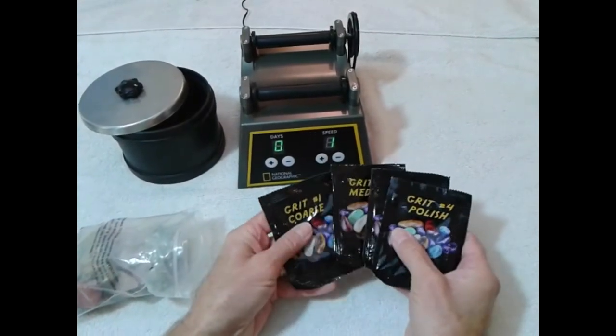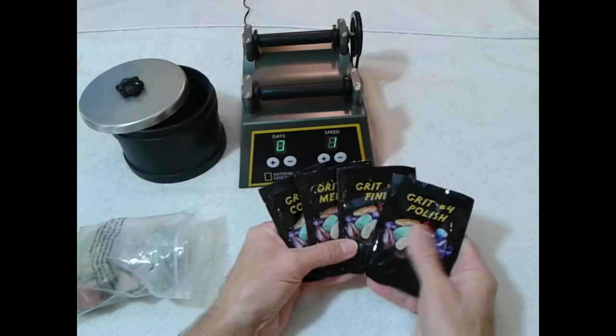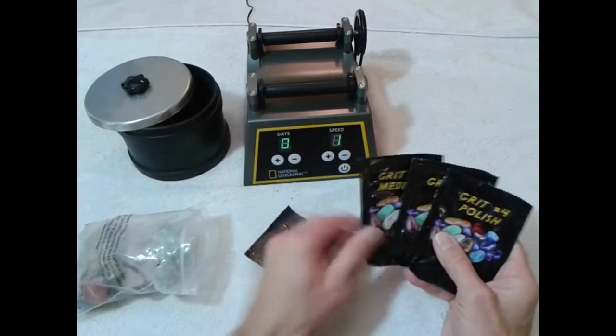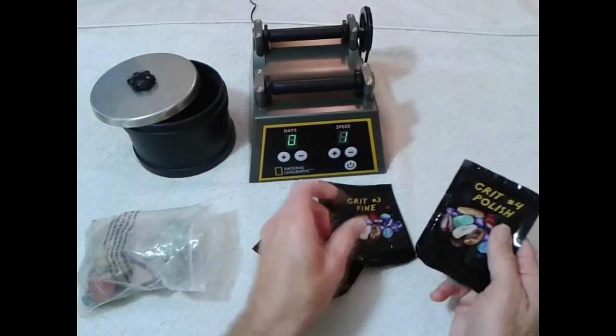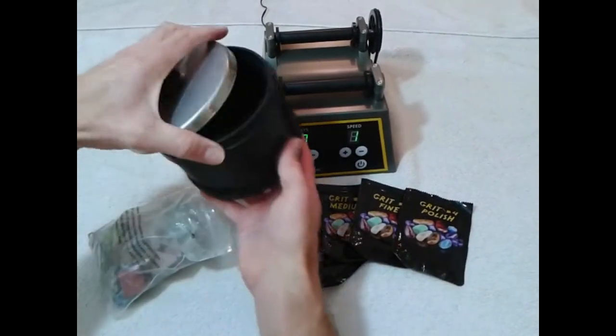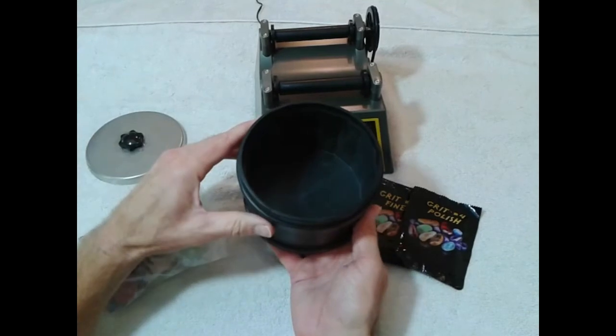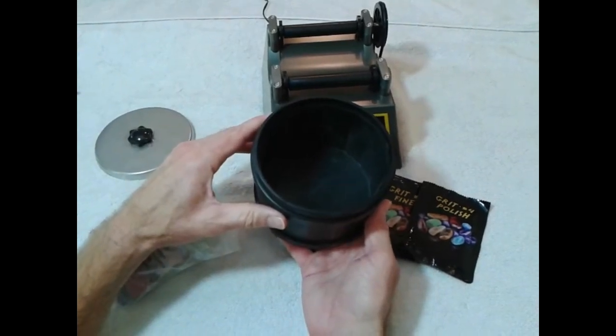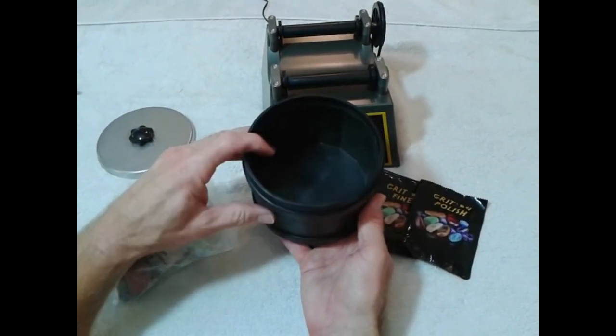Probably very important is this grit. You use this different grit to polish the rocks, and you first use the coarse number one, and then two, then three, and then four. You put this grit inside the tumbler, inside the barrel with the rocks, and you set it to go for a certain number of days. That's how it works.